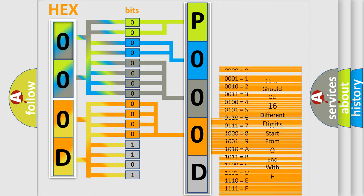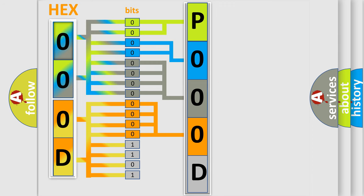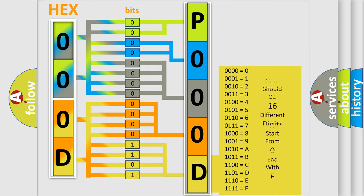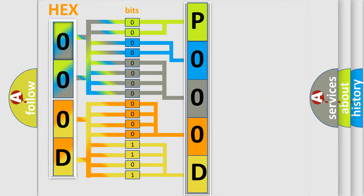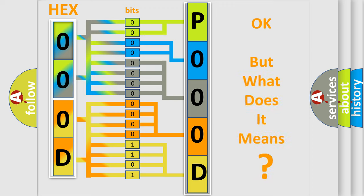A single byte conceals 256 possible combinations. We now know in what way the diagnostic tool translates the received information into a more comprehensible format. The number itself does not make sense to us if we cannot assign information about what it actually expresses.